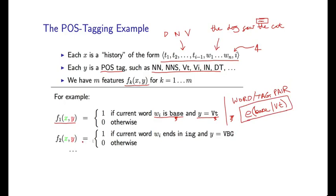Here's a more interesting feature: f2 is 1 if the word being predicted ends in 'ing' and the tag is VBG — the Penn Treebank tag reserved for gerund verbs like 'liking' or 'talking'. This feature captures the tendency for words ending in 'ing' to take this particular tag. You might design a very large number of features like this for all possible prefixes and suffixes combined with all possible tags, or at least those combinations seen in training data.